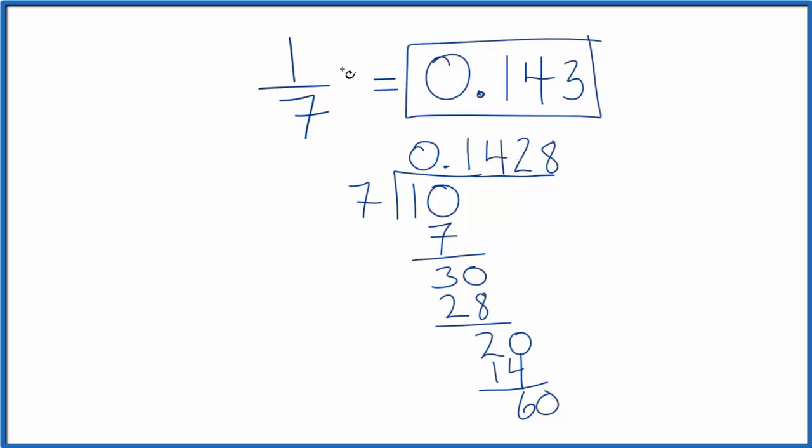So 1 divided by 7, the fraction 1/7 equals 0.143 as a decimal, or you could keep going out further if you needed to. This is Dr. B, and thanks for watching.